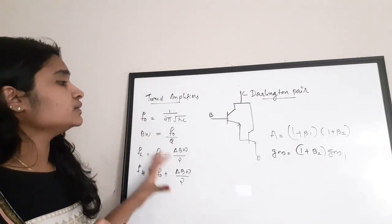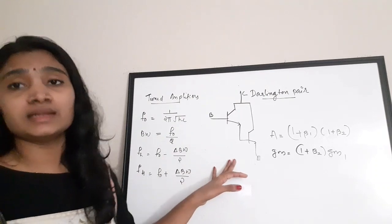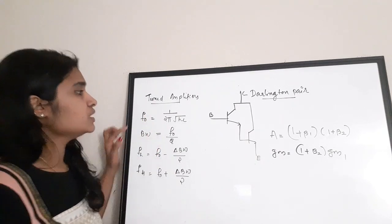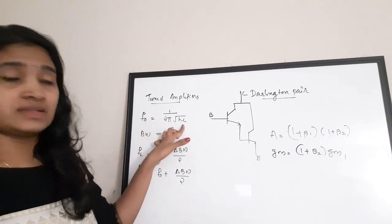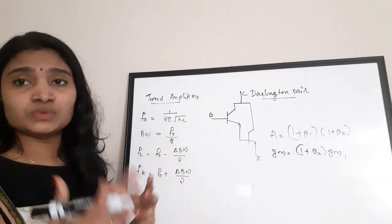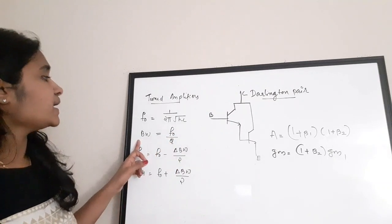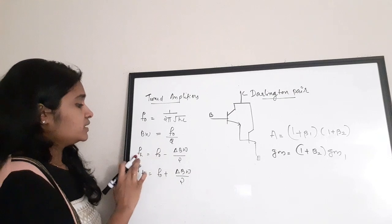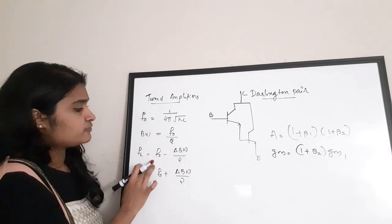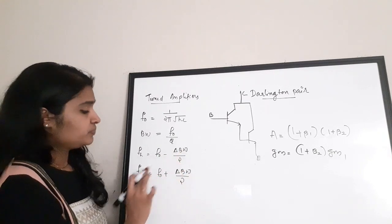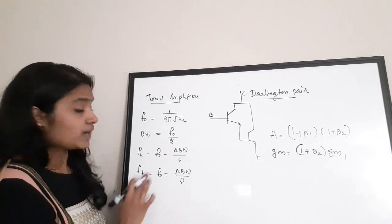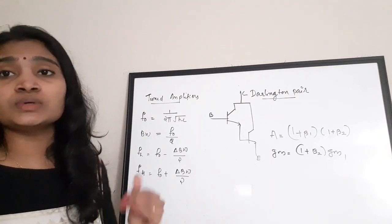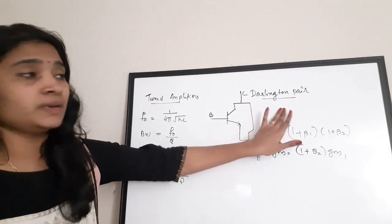For tuned amplifiers, the resonance frequency f0 = 1 / (2π√(LC)), where L is inductance and C is capacitance. Bandwidth BW = f0 / Q, where Q is the quality factor. Lower cutoff frequency: fL = f0 − BW/2. Upper cutoff frequency: fH = f0 + BW/2.